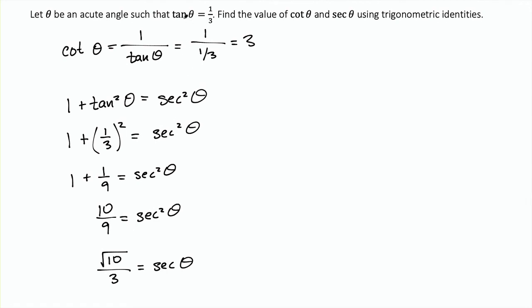By just knowing the tangent of theta, we were able to find cotangent of theta and secant of theta. Note that there is much more we could do: knowing secant gives us cosine, and knowing cosine and tangent lets us find sine. It turns out that knowing just one trigonometric function allows us to find all six.